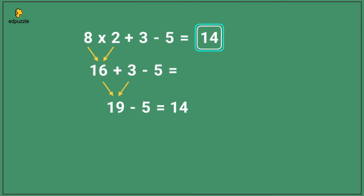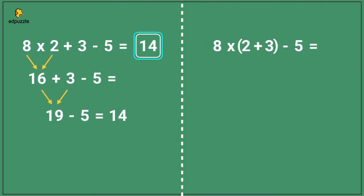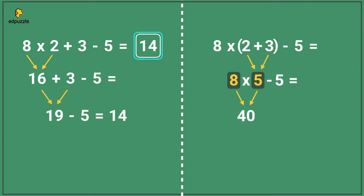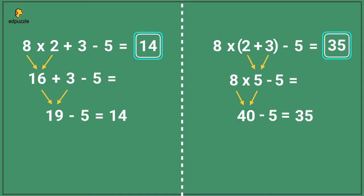Now let's look at a similar problem. What part do we need to solve first? We need to solve what's in parentheses first. What is 2 plus 3? 2 plus 3 is 5. We need to solve 8 times 5. 8 times 5 equals 40. Bring down the subtraction symbol and the 5. What is 40 minus 5? 40 minus 5 equals 35, so the value of this expression is 35.